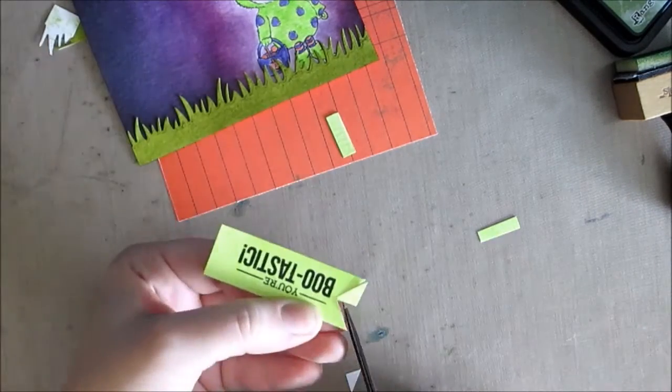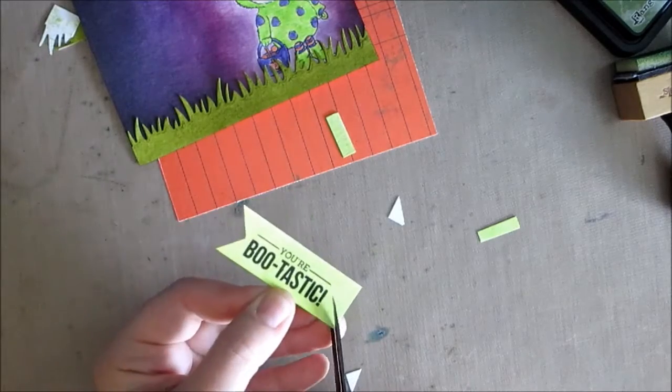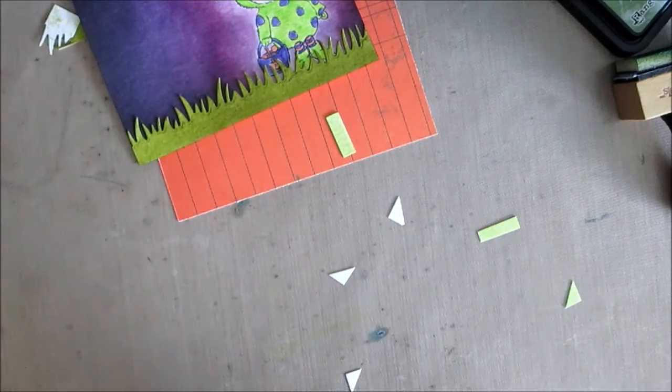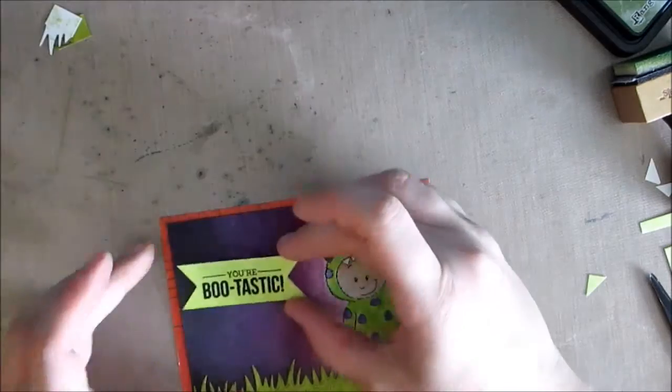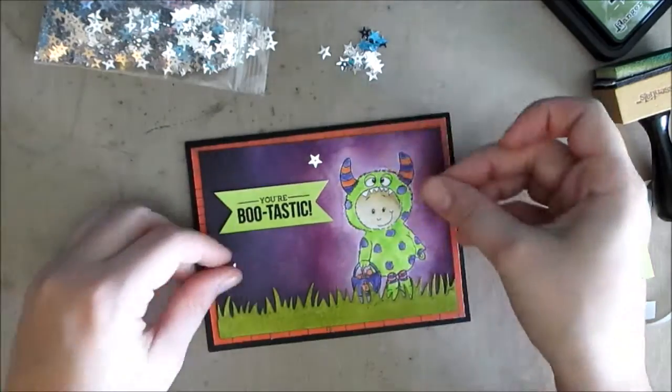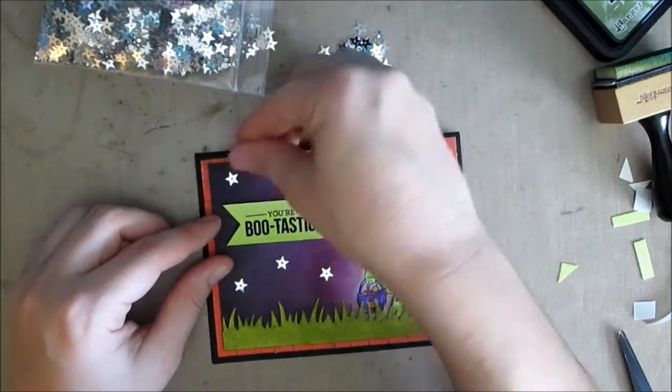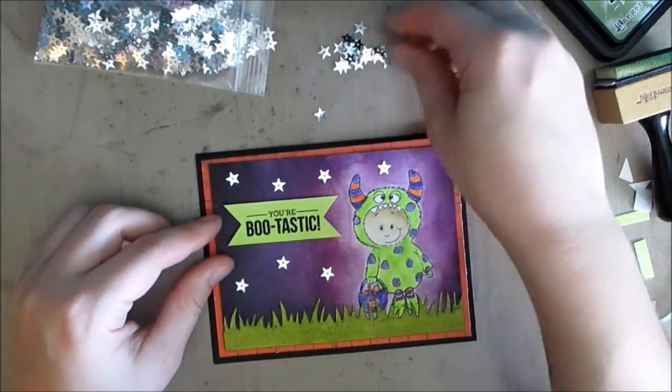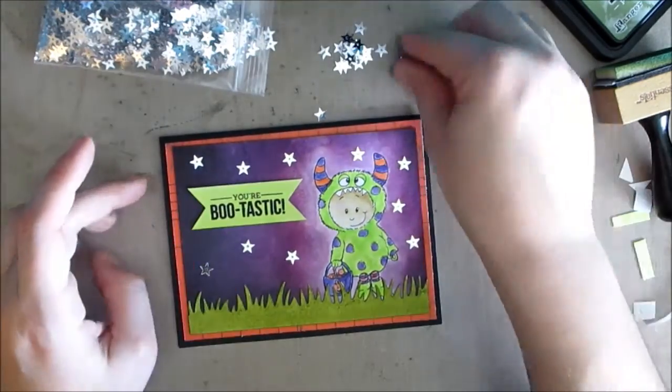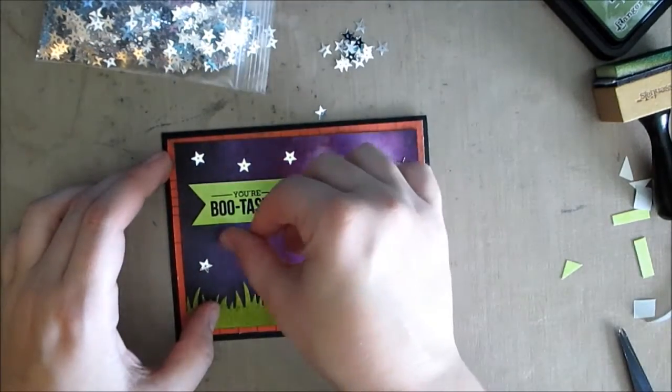I'm just going to cut out the banners and this sentiment is from the Mama Elephant stamp set. I just really love this sentiment you're bootastic. It's so fun. This will make a great card for kids. So I'm just placing that sentiment on with some foam dots or foam tape from Scotch, the really thin stuff so that this card stays nice and flat since everything so far is flat on the card.